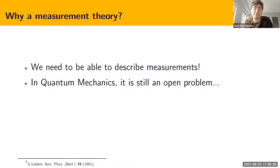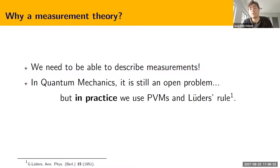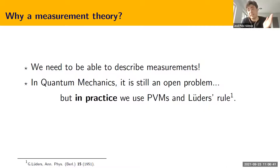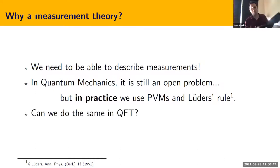However, in the case of non-relativistic quantum mechanics, this problem can be overcome in practice by the use of projective measurements and Lüder's rule, which tells us that after the measurement the state of the system is the projection of the initial state over the eigenspace associated to the outcome. Now the question is: can we do the same in quantum field theory?